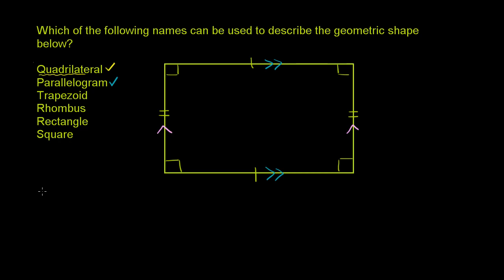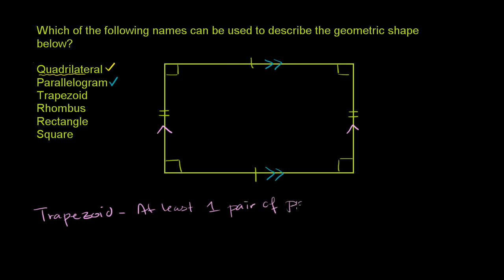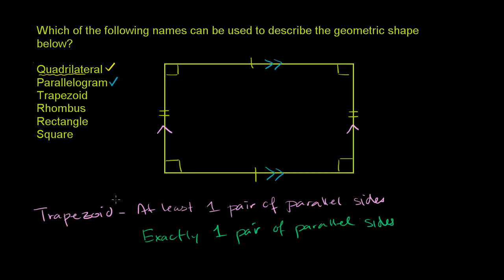Next we ask about a trapezoid. A trapezoid is interesting. Sometimes a trapezoid is defined as any quadrilateral having at least one pair of parallel sides. Sometimes it's defined as having only one pair of parallel sides. There's a debate here — it's not completely settled. Some say at least one pair of parallel sides; the other definition is exactly one pair of parallel sides. How we answer this question depends on which definition for a trapezoid we pick.